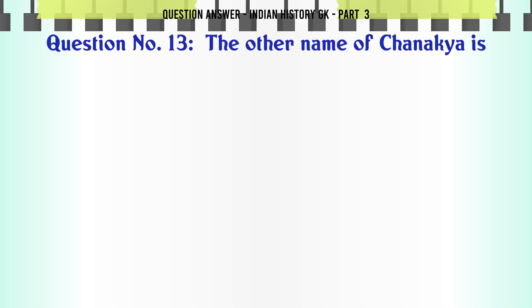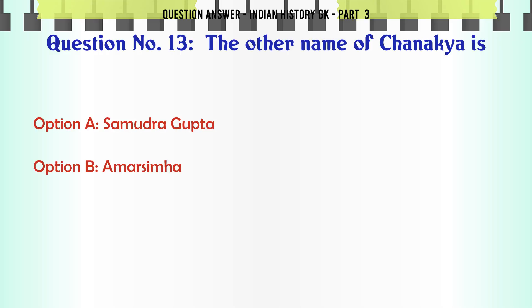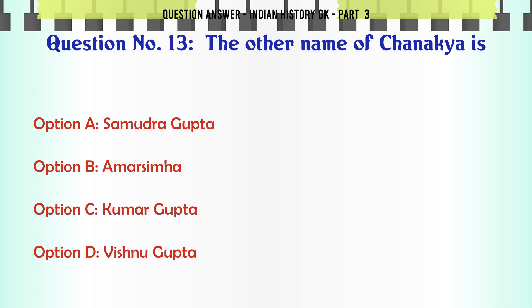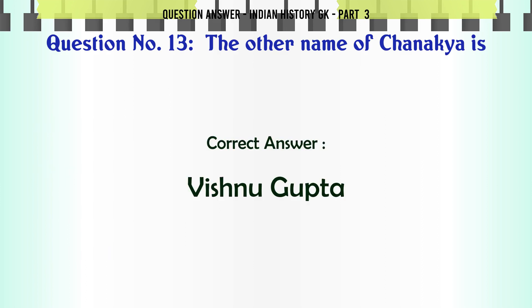The other name of Chanakya is: A. Samudra Gupta, B. Amar Simha, C. Kumar Gupta, D. Vishnu Gupta. The correct answer is Vishnu Gupta.